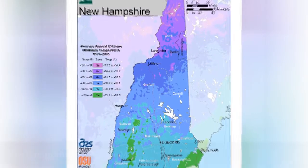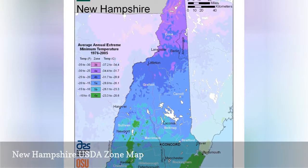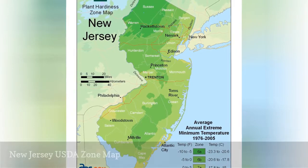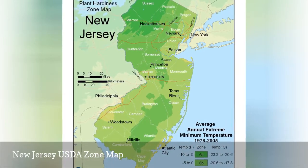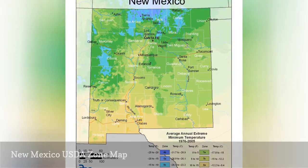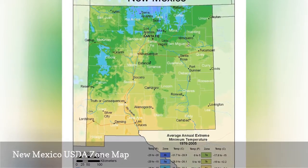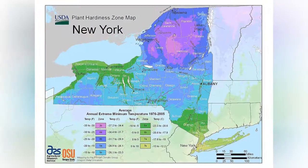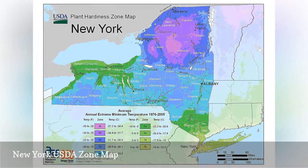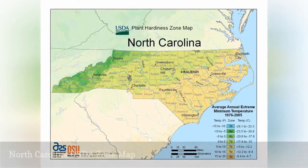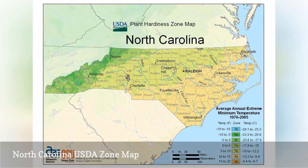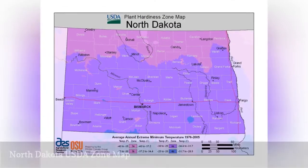USDA zones 3B through 6A are represented in New Hampshire. USDA zones 6A through 7B are represented in New Jersey. USDA zones 4B through 9A are represented in New Mexico. USDA zones 3B through 7B are represented in North Carolina. USDA zones 5B through 6B are represented in Ohio.